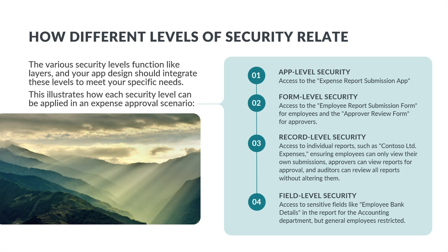The various security levels function like layers, and your app design should integrate these levels to meet your specific needs. In the expense approval scenario: app-level security ensures employees can access the app to submit their expense reports; form-level security controls which forms are visible to employees and approvers; record-level security restricts access to only the relevant expense reports based on user roles; and field-level security safeguards sensitive information such as bank details, limiting access to only those who need it for processing reimbursements.